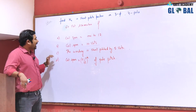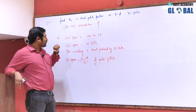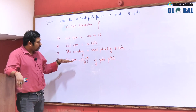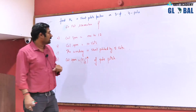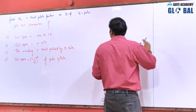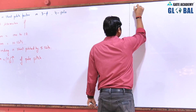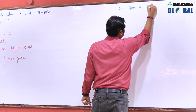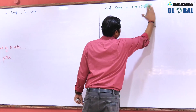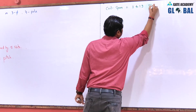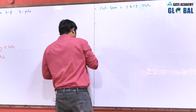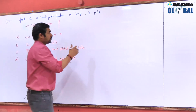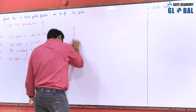This problem is divided into 4 parts: when coil span is 1 to 12 slots, when coil span is 10 slots, when winding is short pitched by 5 slots, and when coil span is 11/12th of pole pitch. For Part A, coil span equals 1 to 12 slots. First, we find m: m = 60 / (4 × 3) = 5. So the number of slots per pole per phase is 5.